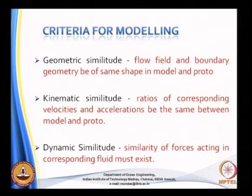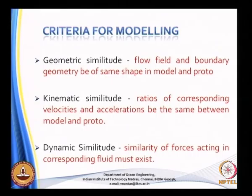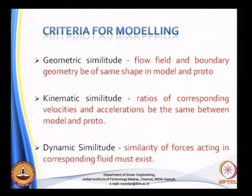Criteria for modeling — which you may have already covered in your undergraduate course — include geometric similarity, kinematic similarity, and dynamic similarity. Geometric similarity requires the flow field and boundary geometry to be of the same shape in model and prototype. Kinematic similarity requires that velocity and acceleration ratios be the same between model and prototype. Dynamic similarity requires that the ratios of forces acting on structures or fluids also correspond.